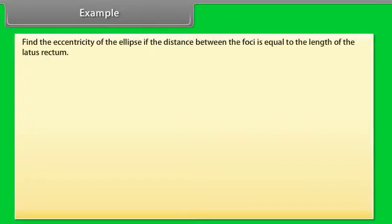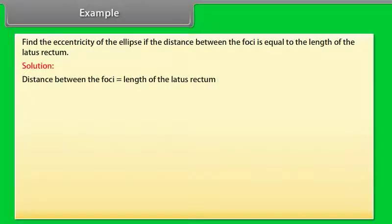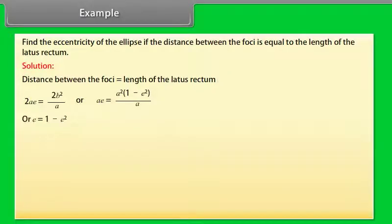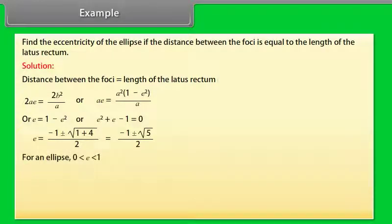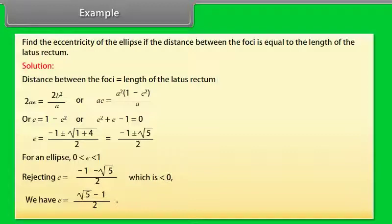Example: Find the eccentricity of the ellipse if the distance between the foci equals the length of the latus rectum. Solution: 2ae = 2b²/a, so ae = a²(1 - e²)/a, giving e = 1 - e². Therefore e² + e - 1 = 0, so e = (-1 ± √5) / 2. For an ellipse, 0 < e < 1. Rejecting e = (-1 - √5)/2, which is less than 0, we have e = (√5 - 1) / 2.